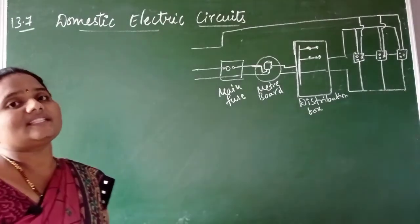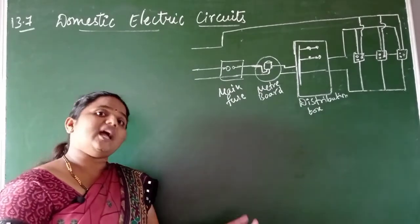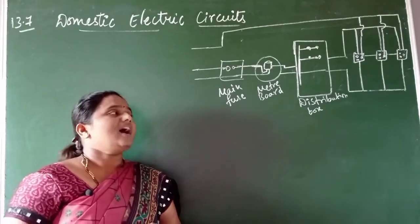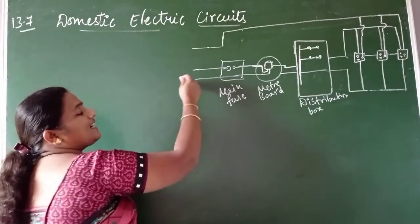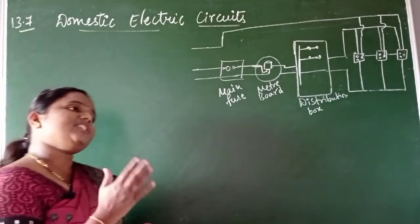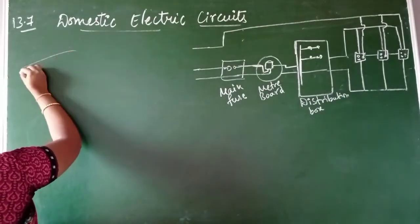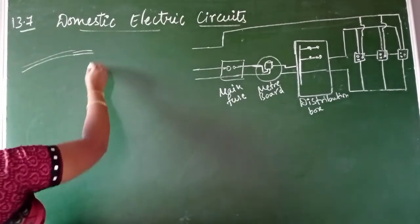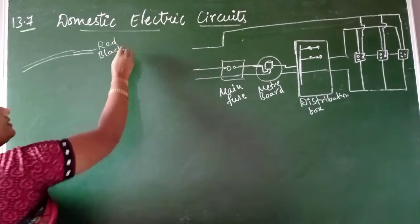Electricity or electric current is produced at power stations. From the power station, how the current is transferred to our house is what we are going to study under this topic. This figure clearly shows how the transmission of electric current takes place in a domestic setting. The current coming from the power station goes through a cable consisting of two wires made of copper — one in red color and the other in black color.